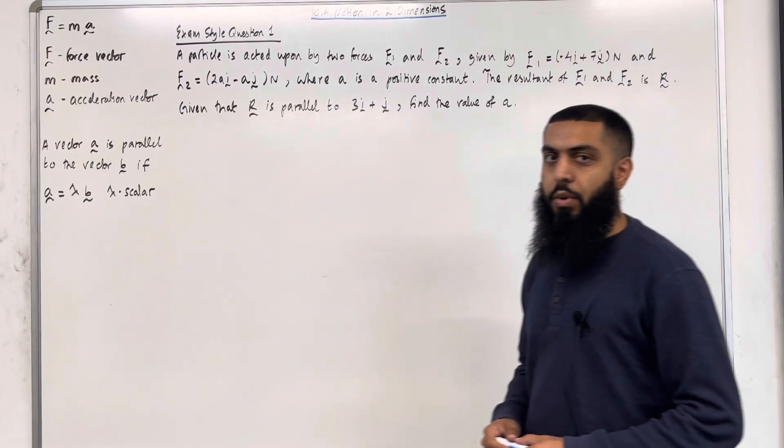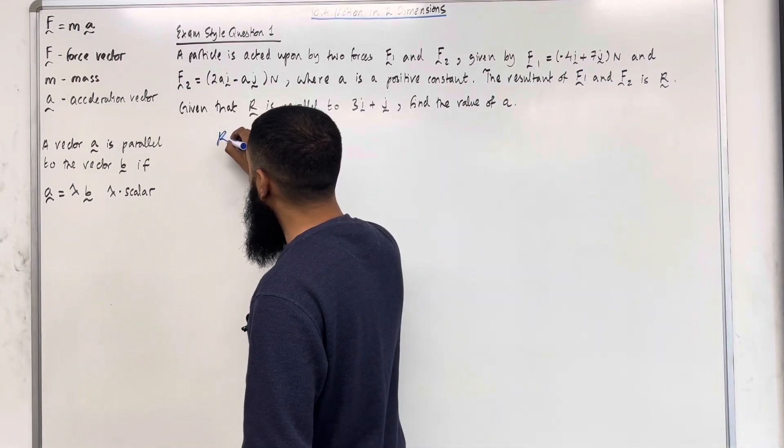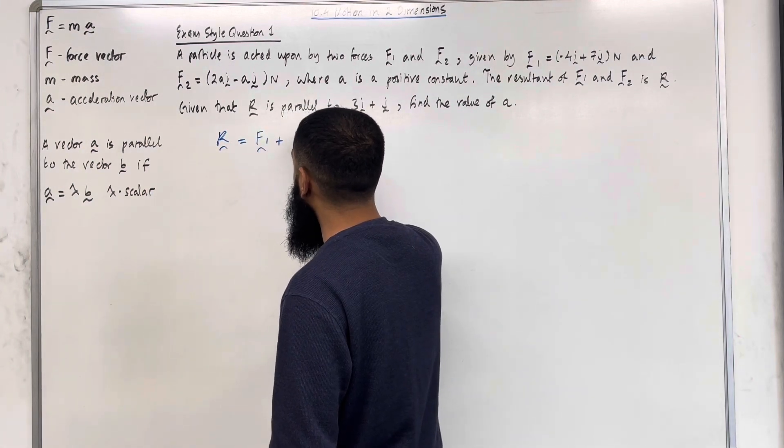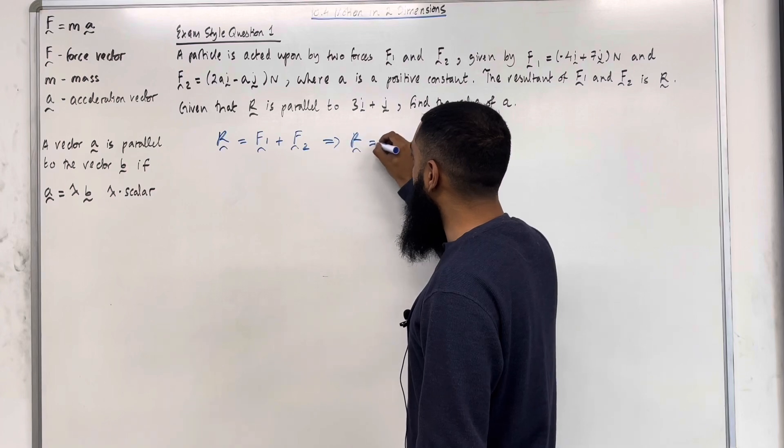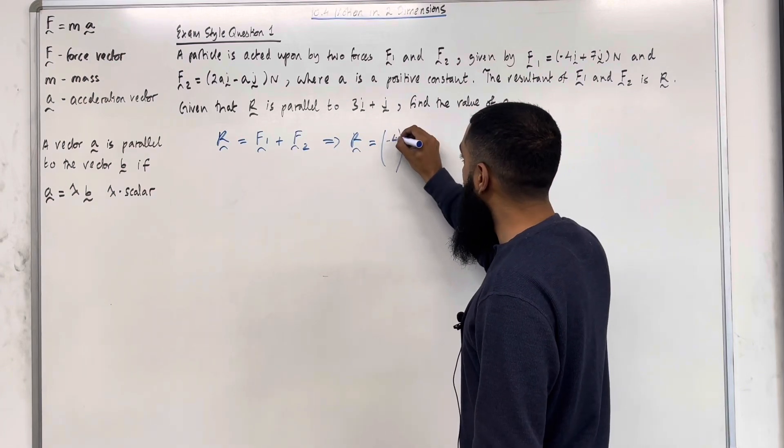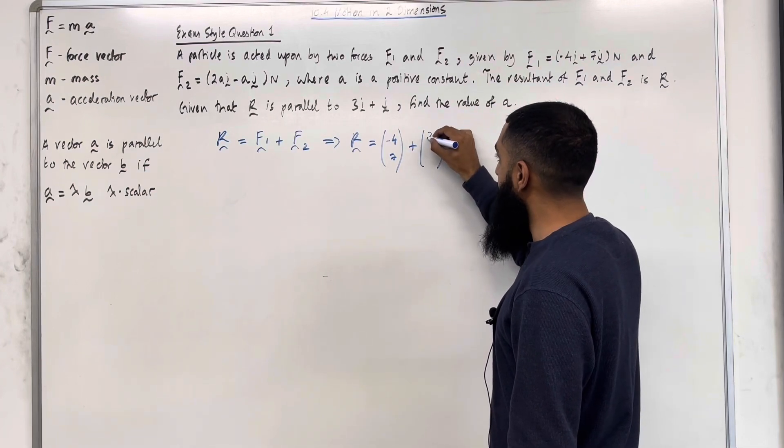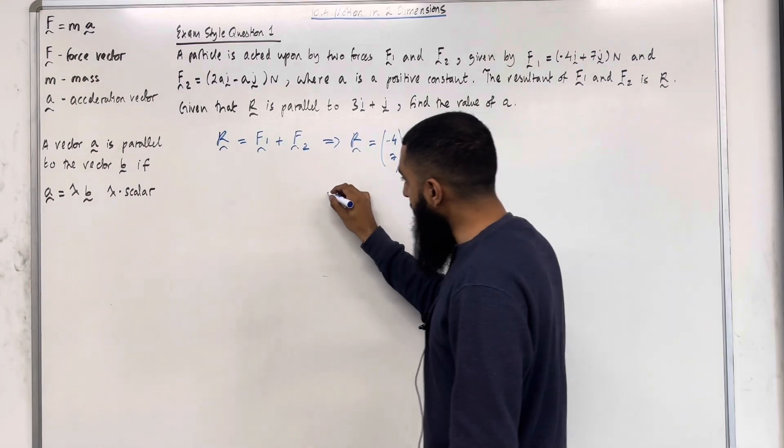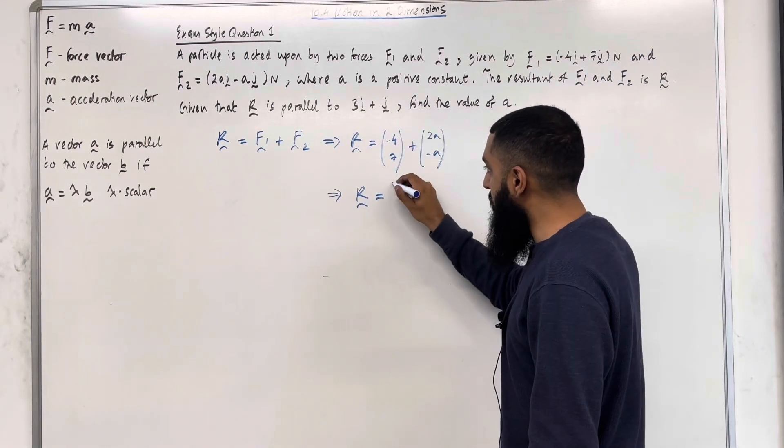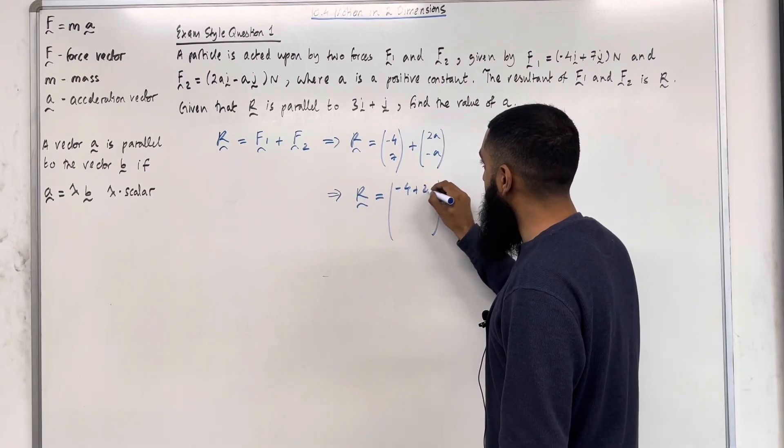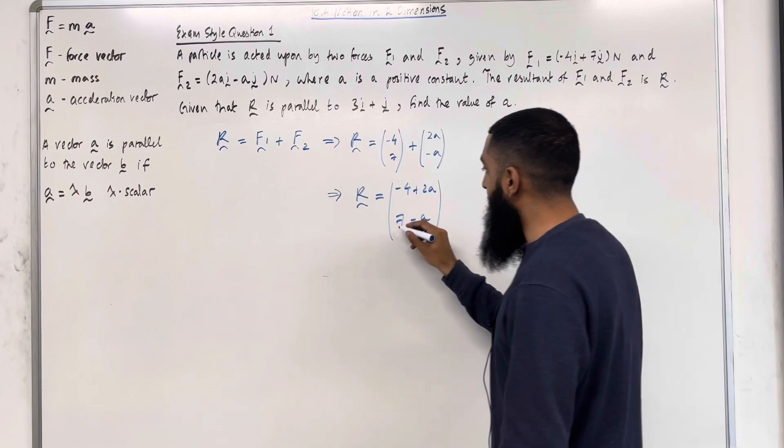Let's have a look at the solution to exam style question 1. Firstly, the resultant force R equals F1 plus F2. This implies that R equals F1, which has a column vector of minus 4 and 7, plus F2, which has column vectors 2a and minus a. This in turn implies that the resultant force R equals minus 4 plus 2a, that's the i component, and 7 minus a, that is the j component.